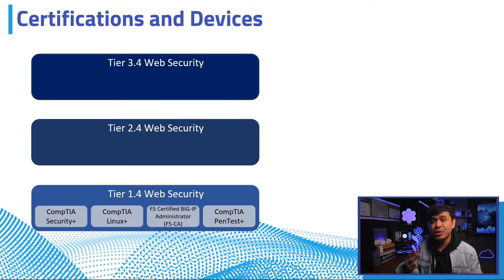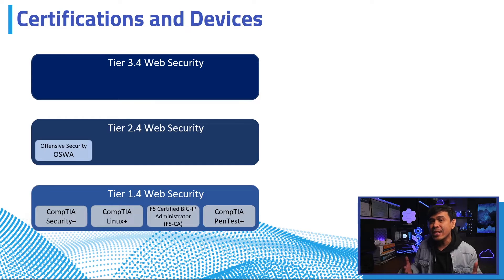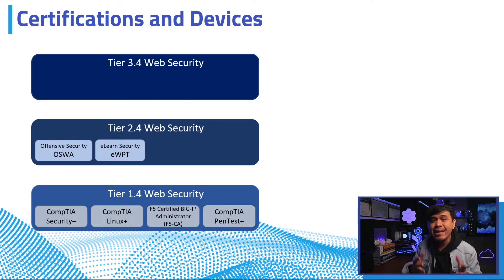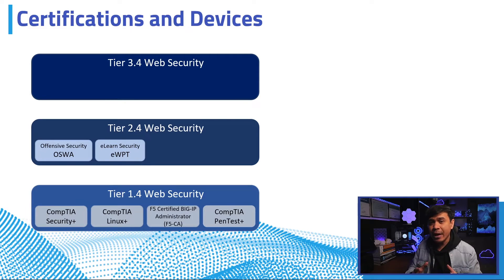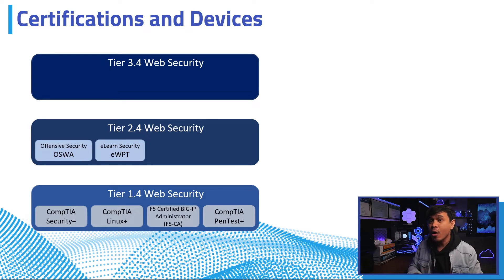In Tier 2 we have two penetration testing certifications: OSWA, the Offensive Security Web Assessor, and eWPT, the eLearn Web Application Penetration Tester — from Offensive Security and eLearnSecurity respectively. Both are hands-on lab exams with no expiration. OSWA is a 24-hour lab exam plus another 24 hours for documentation and reporting, while eWPT is a seven-day hands-on lab plus another seven days for reporting.